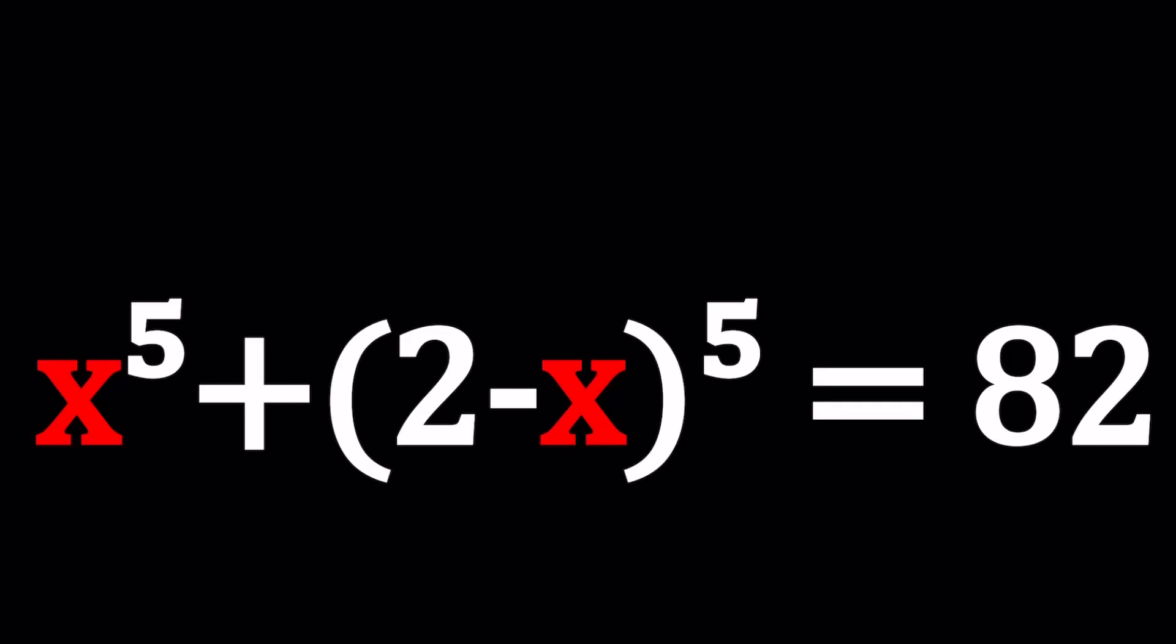Hello everyone. In this video, we're going to be solving a polynomial equation. We have x to the fifth power plus the quantity 2 minus x to the fifth power equals 82, and we're going to be solving for x values.